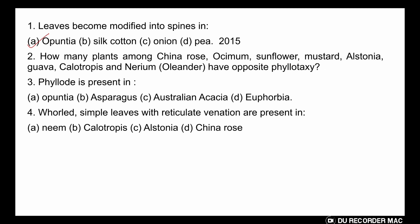The next question: how many plants among China rose, Ocimum, sunflower, mustard, Alstonia, guava, Calotropis, and Nerium have opposite phyllotaxy? You will get this kind of question a lot — it is very common in morphology chapters, so you have to remember all the examples given in NCERT. The answer is three.